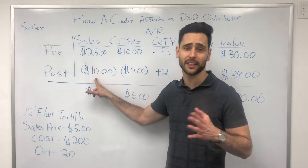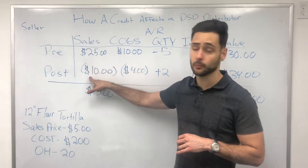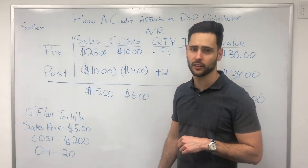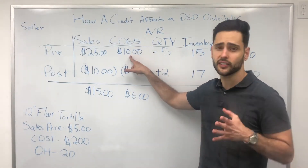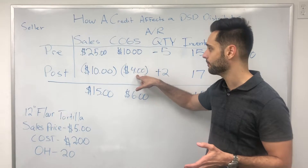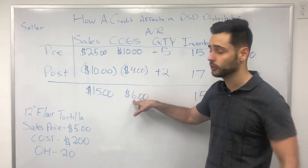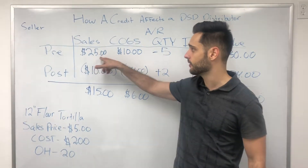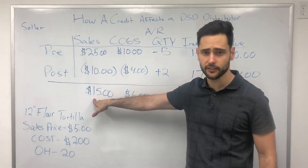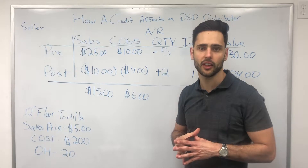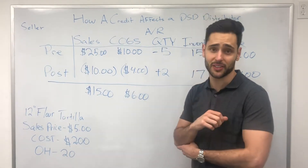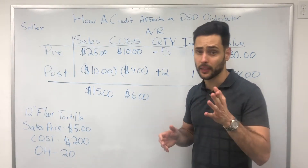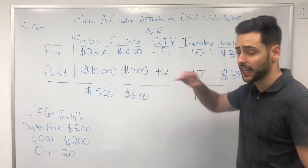Post-credit, here's what happens to the sale: sales are subtracted by $10. So whereas you sold $25, you subtract $10 because of the credit, and your actual sales are now $15. On the cost of goods sold side, your COGS initially were $10, but you credited $4, so your total COGS is now $6. Whereas before your gross profit was $15, your gross profit is now only $9 — you've killed your gross profit by $6 just with those credits.